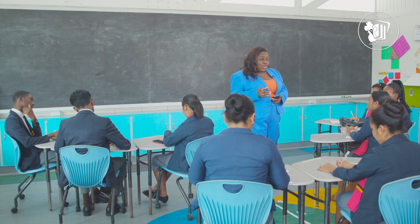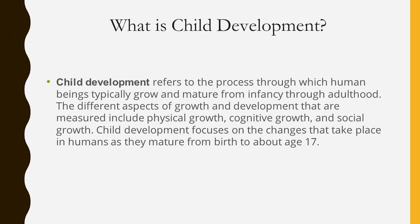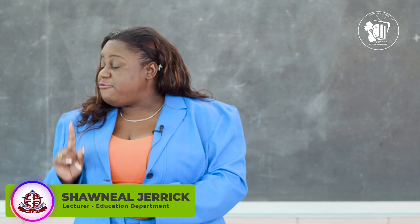You might be wondering, what is child development? Child development refers to the process through which human beings typically grow and mature from infancy through childhood. The different aspects measured include physical growth, cognitive growth, and social growth. Child development focuses on changes that take place in humans as they mature from birth to about age 70, and in this unit we will focus on middle childhood.